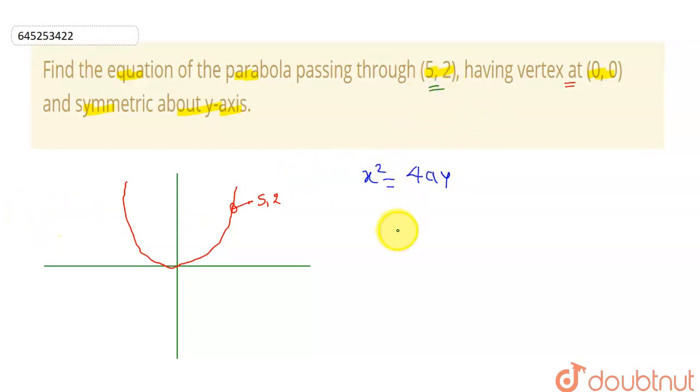As this is passing through this point (5,2), it will satisfy this equation. So if I substitute this point here, I will be getting 5² = 4a × 2. So I will be getting 4a = 25, so 25 divided by 2.